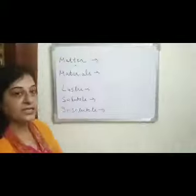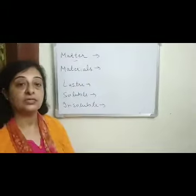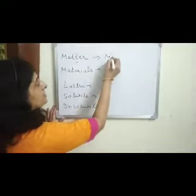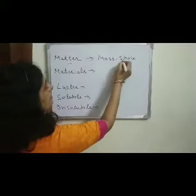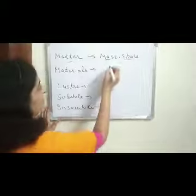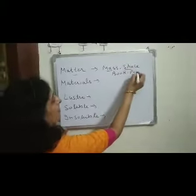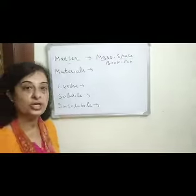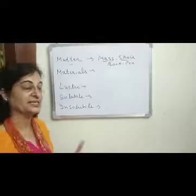Matter: anything that has mass and occupies space is called matter. Your book is a matter, your pen is a matter, a bench is a matter, air is a matter, water is a matter — because all of them have mass and occupy space.